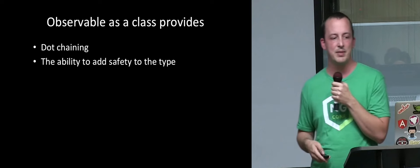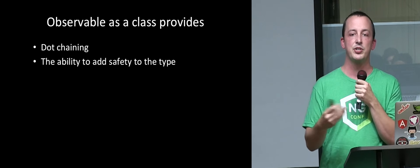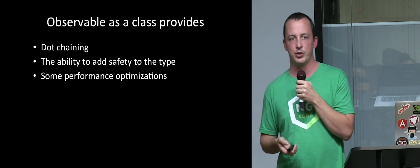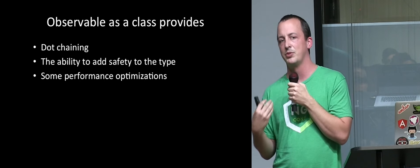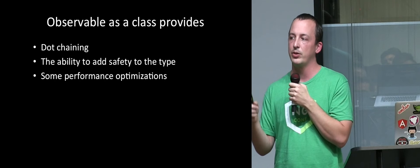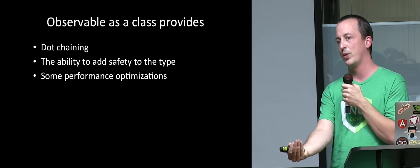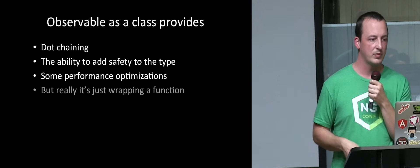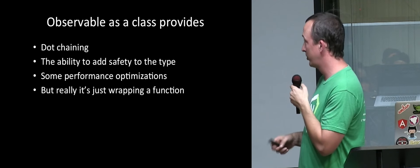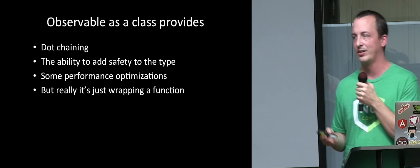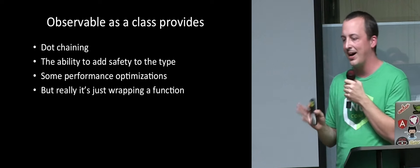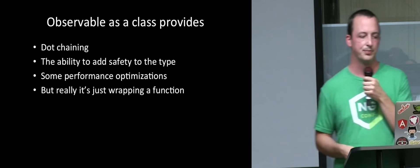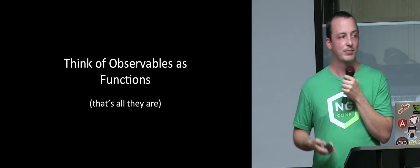If you've ever wondered why observable is a class when it's doing something lazy like this — it's a class to enable dot chaining and a lot of other safety mechanisms. The safety to the type includes things like the observer you're provided is not allowed to next into it after it completes. There are also performance optimizations — for example, if you have an observable that's scalar, a synchronous observable of one value, RxJS 5 will pull the value directly out of the class without subscribing, executing things more quickly.